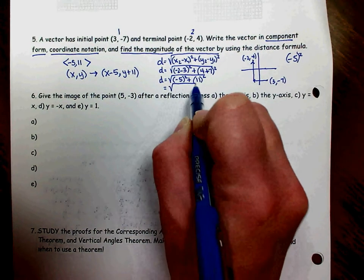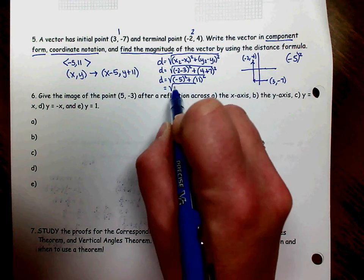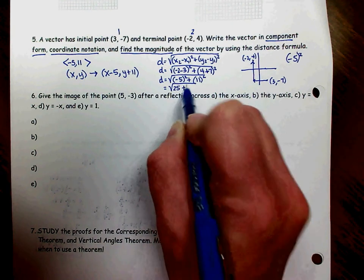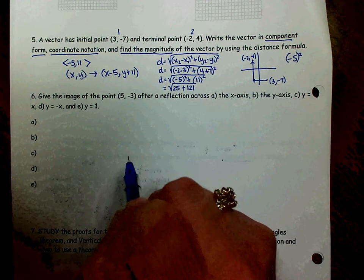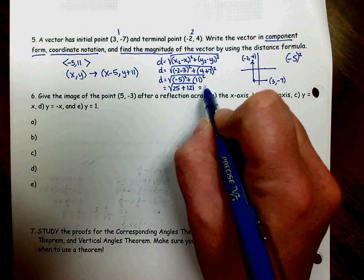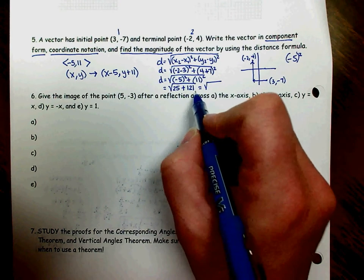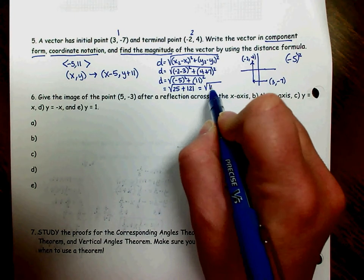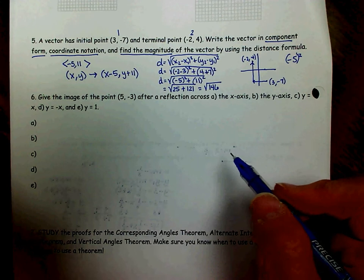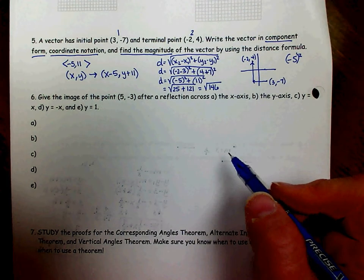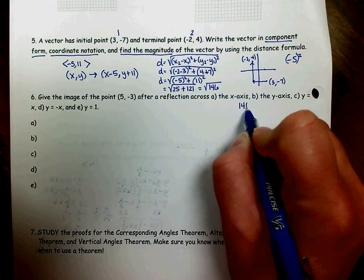When you square a number, you always get a positive result. -5 squared is 25, plus 11 squared is 121. So now I add those two numbers. 25 plus 121 gives me a total of 146 under the radical. Remember, you always want to simplify your radical if you can.